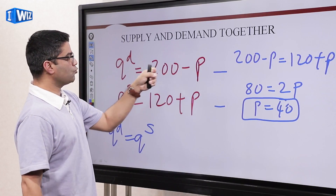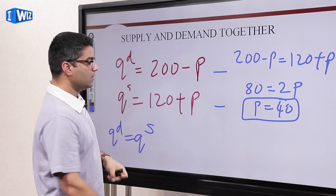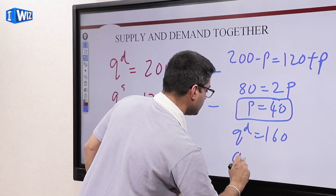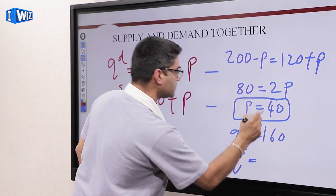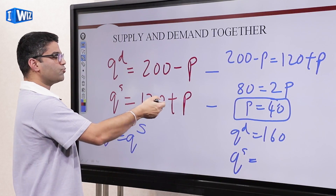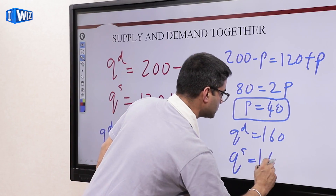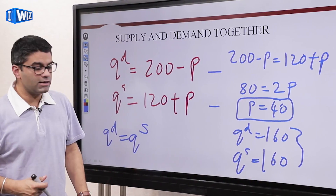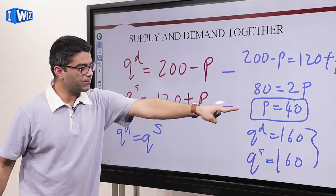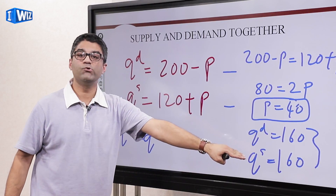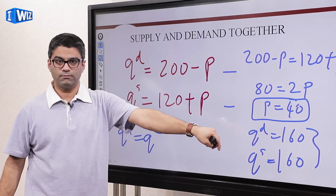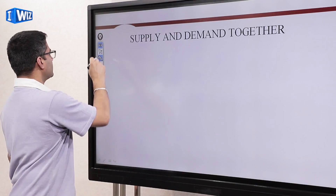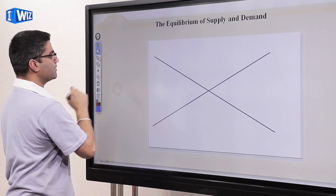You can take that equilibrium price and put it back into either of the two equations and you'll get the same number. If we put price 40 into the demand equation, Qd is 200 minus 40, which equals 160. Or if you put 40 into the supply equation, you get 120 plus 40, which is also 160. So the equilibrium quantity is 160 — the price where Qd and Qs are identical. Make sure you're able to work with this numerically.